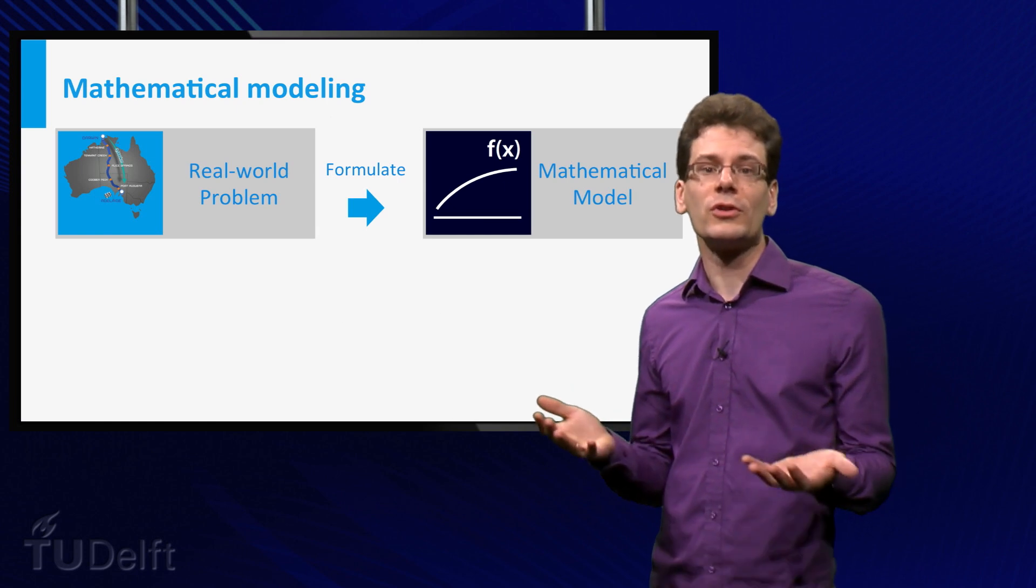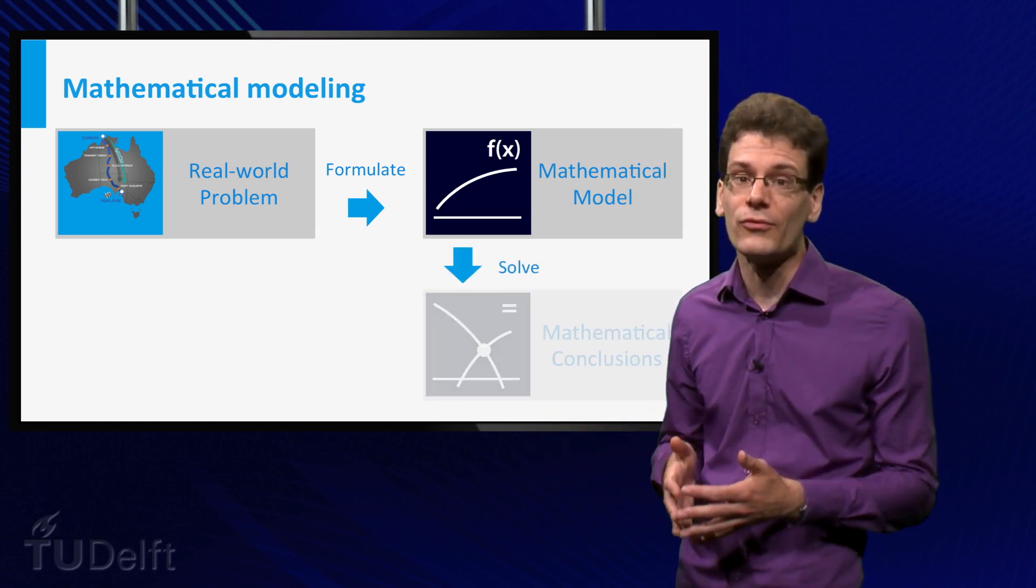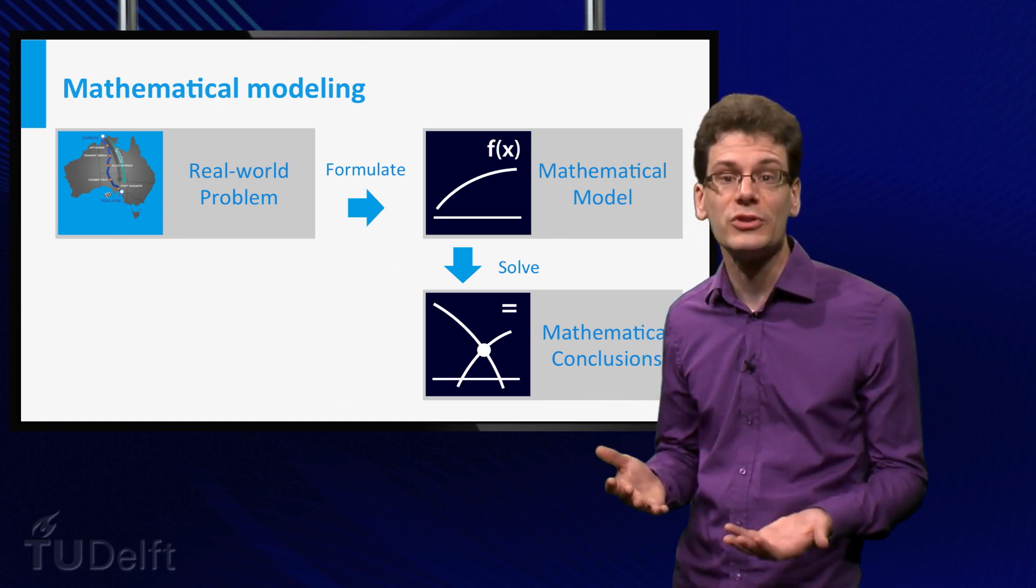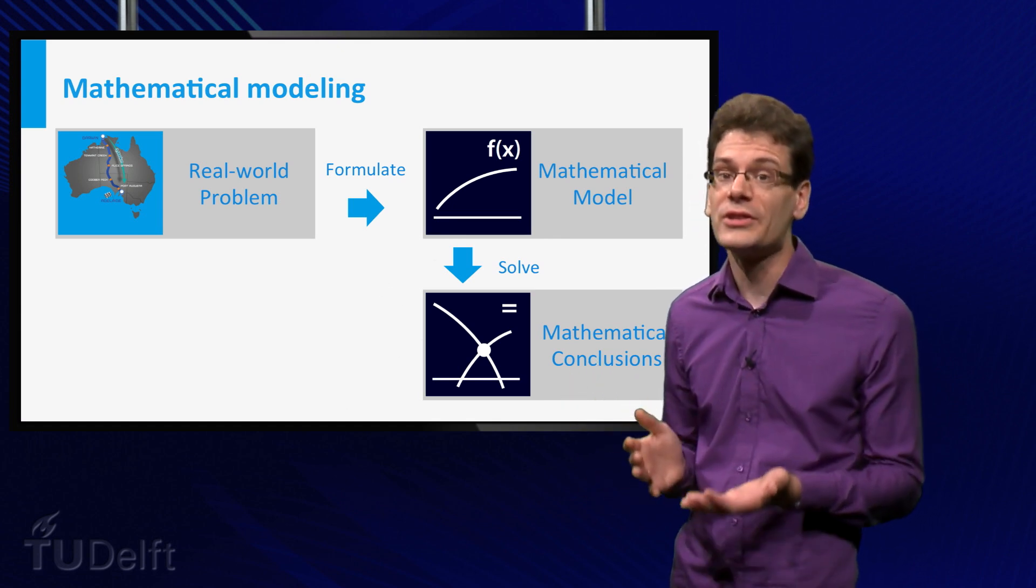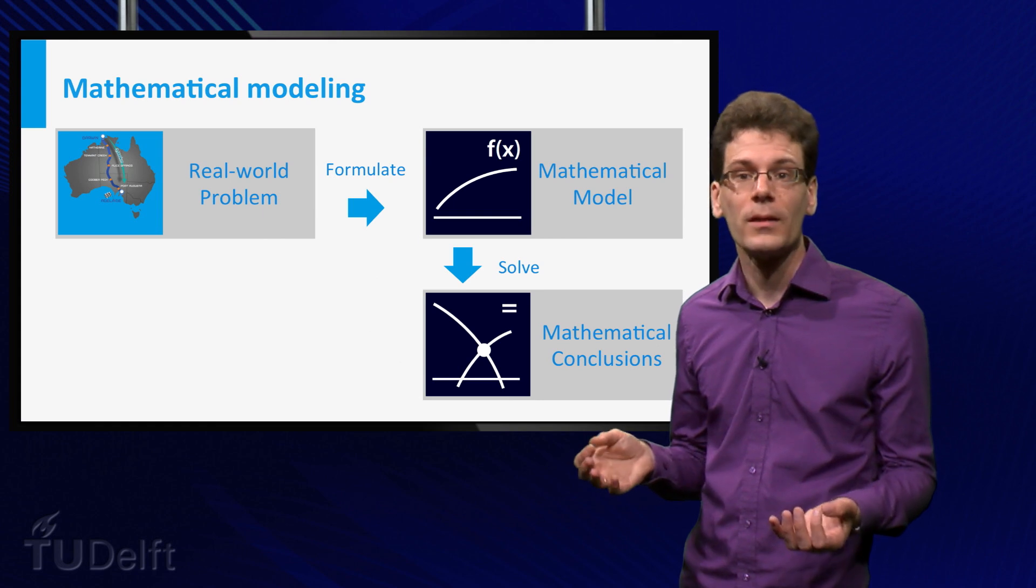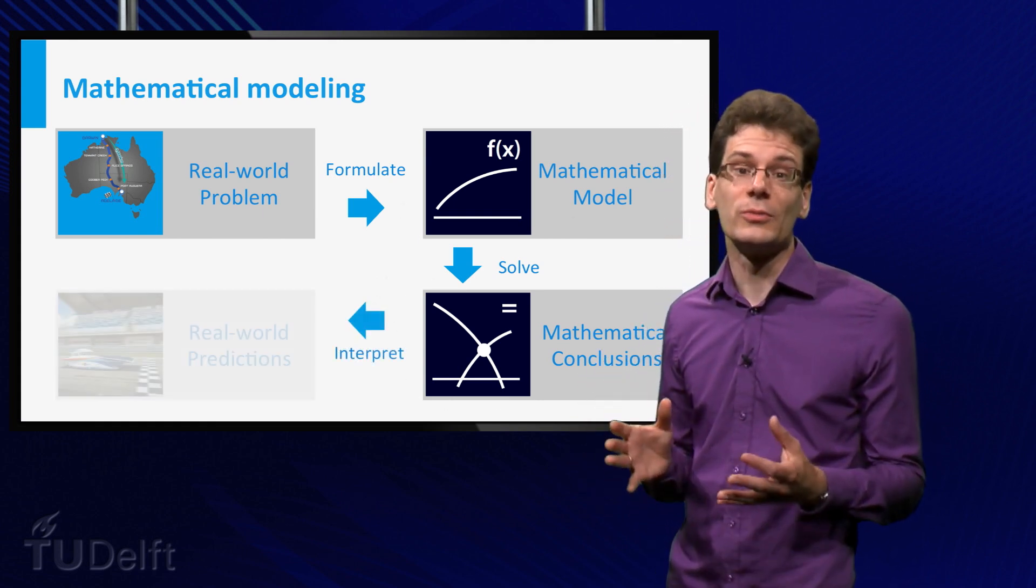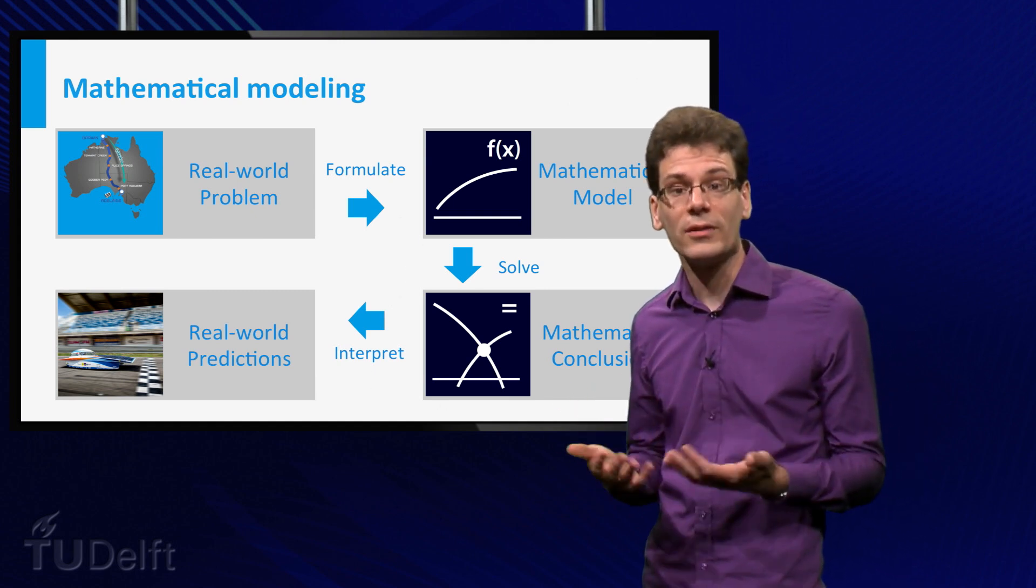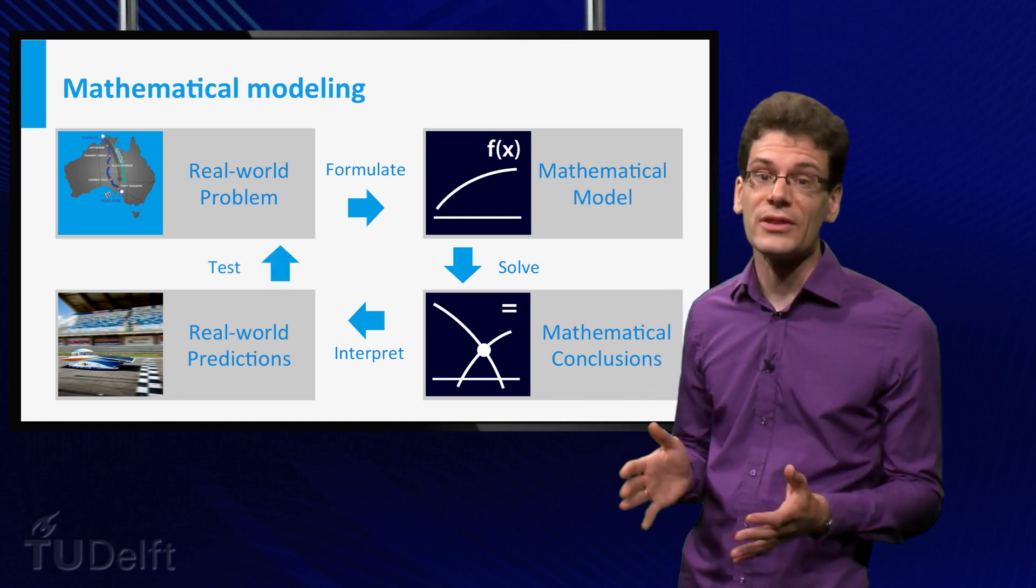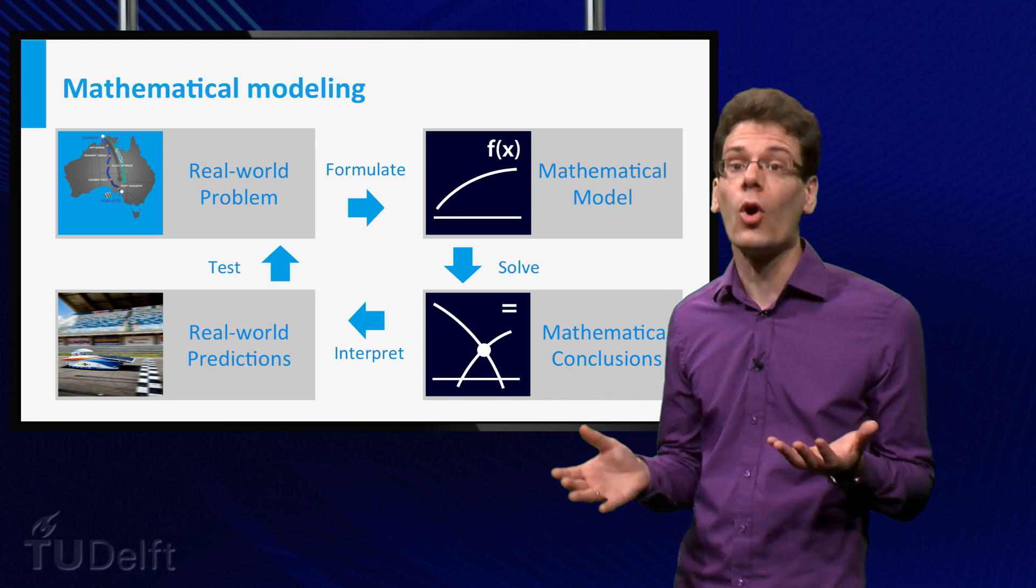Once you've modeled your problem in terms of functions, you can start making calculations. This often involves solving equations, in particular if you try to find an optimal situation. For example, what is the highest speed the Nuance Car can attain given certain weather conditions? After solving the mathematical questions, you have to interpret the results to predict how a design or phenomenon will work in real life. And ultimately, you will have to test your predictions and see whether they are correct, or whether you need another or more refined model.